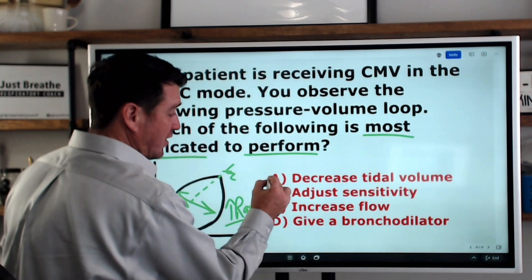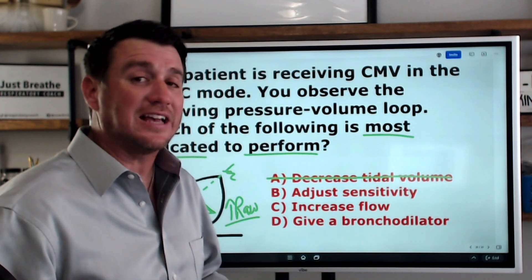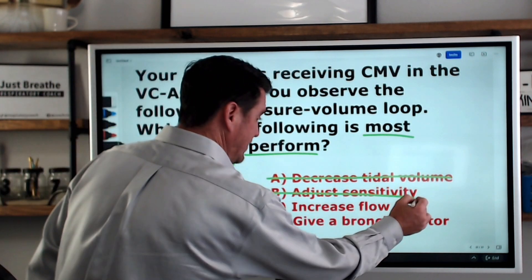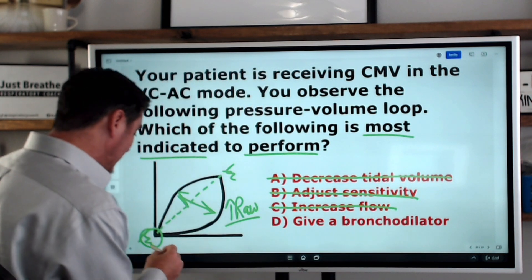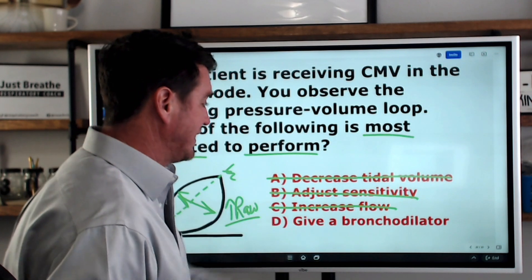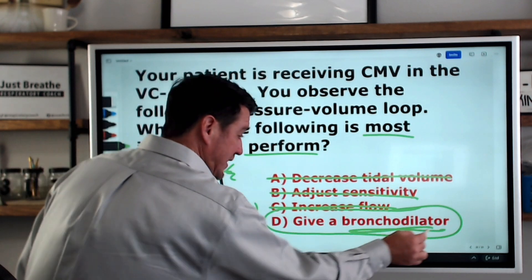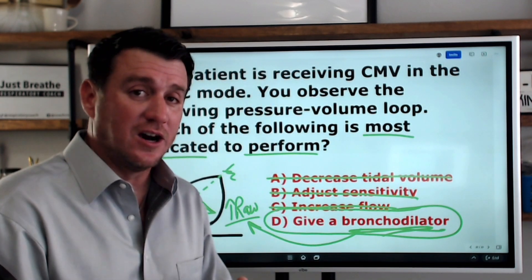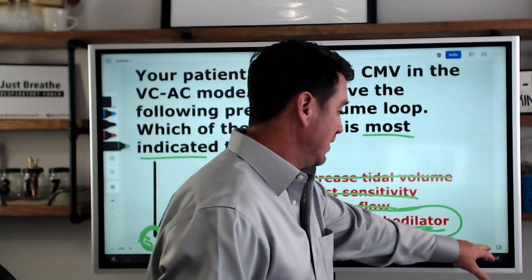Answer number one, decrease tidal volume. Nope. That would have been the answer to the previous question if it was asking us what to do. Didn't ask that. This is not the answer. Adjust sensitivity. Nope. That would be back here. We don't see anything like that. Increase flow. Nope. Again, it would be back here. We don't see anything about flow or flow hunger or anything like that. Which leaves us answer D, which is give a bronchodilator. Giving a bronchodilator will help us to reduce the airway resistance that is present. Hopefully help fix this patient and this finding associated with the pressure volume loop.